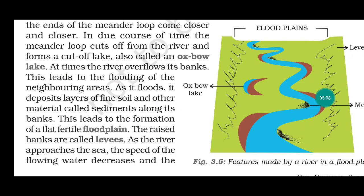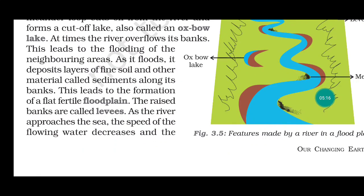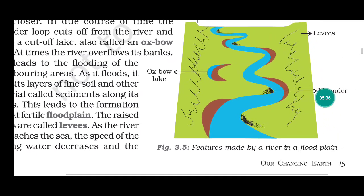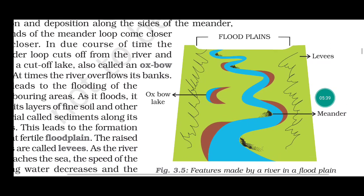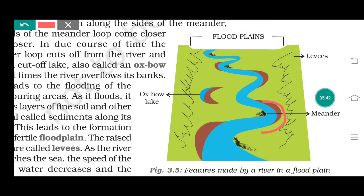All the sediments that collect along the banks form a very fertile layer, and this leads to the formation of a flat fertile flood plain. The raised banks are called levees. We can see in the picture these raised banks — these are known as levees.